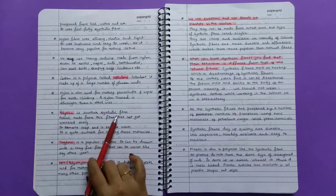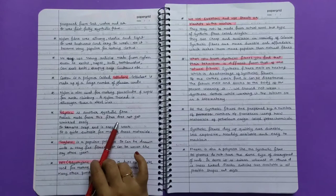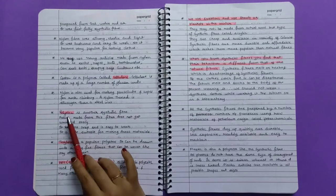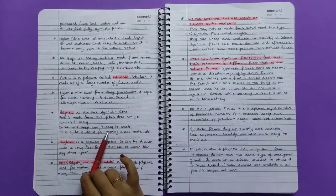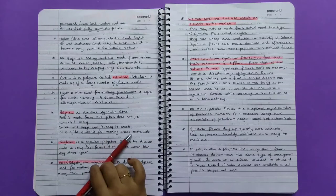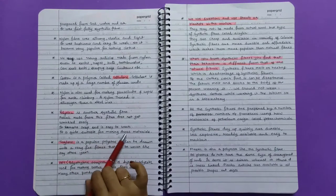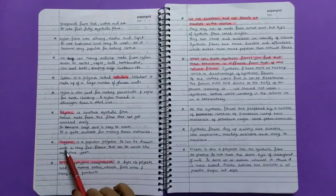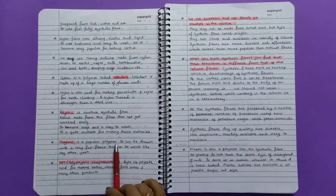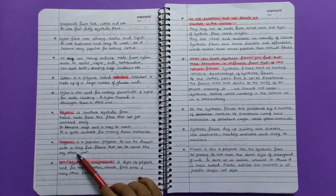Polyester is another synthetic fiber. Fabrics made from this fiber do not get wrinkled easily. It remains crisp and is easy to wash. It is quite suitable for making dress materials. Terylene is a popular polyester. It can be drawn into very fine fibers that can be woven like any other yarn.